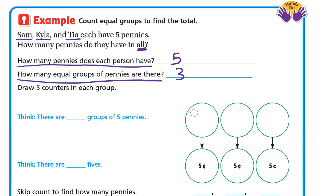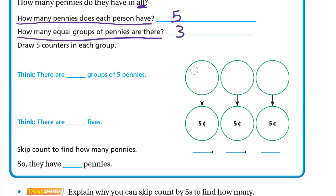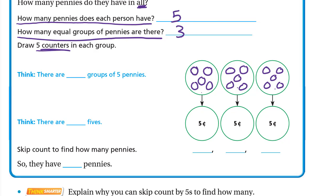Each person has five pennies, so let's draw five counters in each group. We have three groups: one, two, three. In each group we draw five counters: one, two, three, four, five. We have three groups of five pennies — that's three fives.